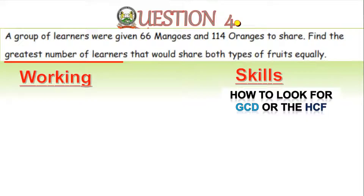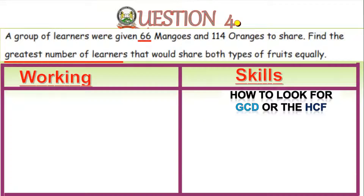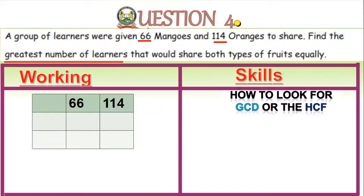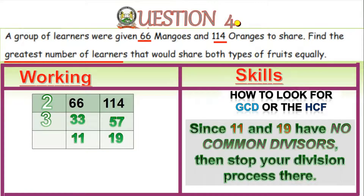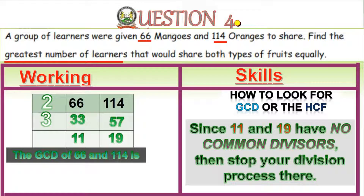GCD of 66 and 114: using a division table — 2 divides both: 66 ÷ 2 = 33 and 114 ÷ 2 = 57. Then 3 divides both: 33 ÷ 3 = 11 and 57 ÷ 3 = 19. Since 11 and 19 have no common factors, stop here. The GCD is the product of the factors used: 2 × 3 = 6. The answer is 6 learners.